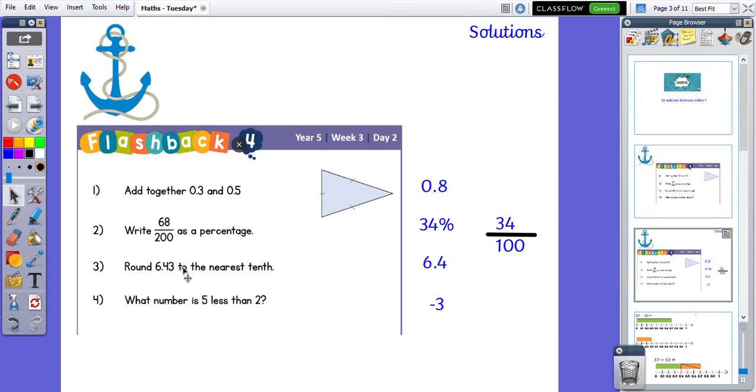Number four is a little bit tricky as well. Some of you might have done 5 subtract 2. However, that's not what the question is asking for. It's asking you to do 2 subtract 5, so you are going to move into negative numbers. If you plot 2 and jump 5 spaces to the left, towards and past 0, you would get to minus 3. So your answer is minus 3.